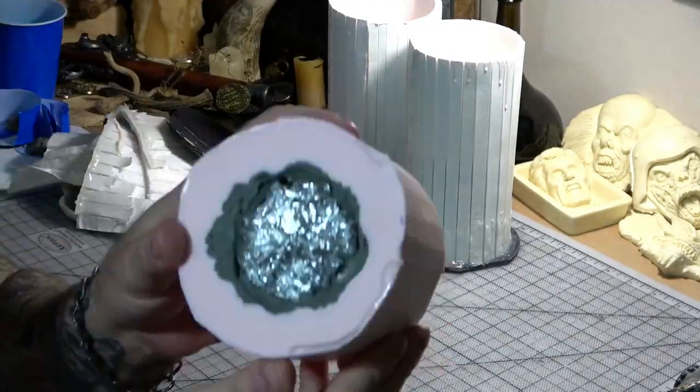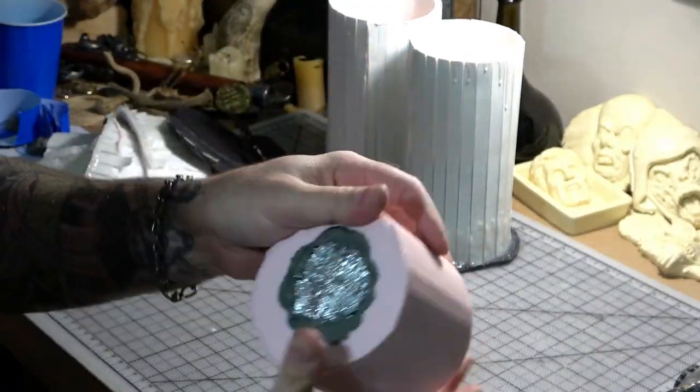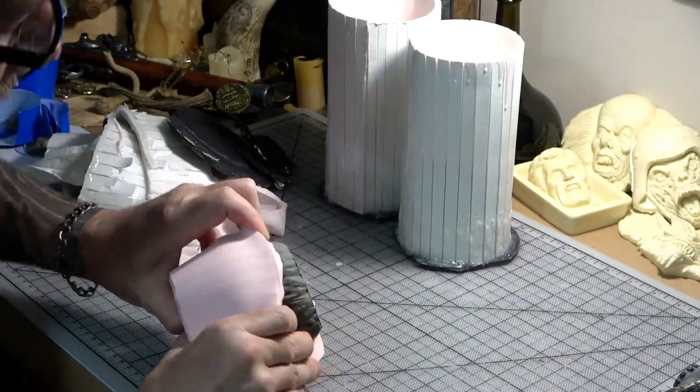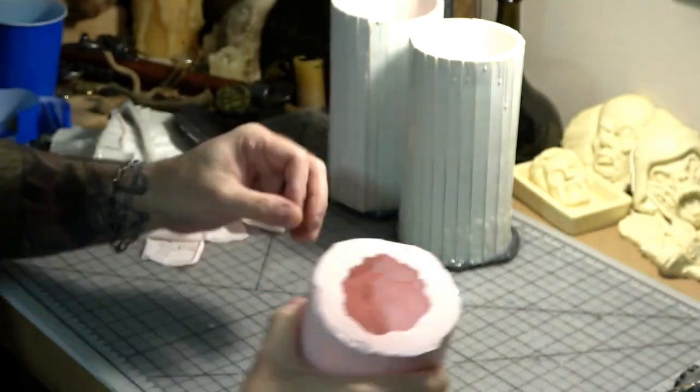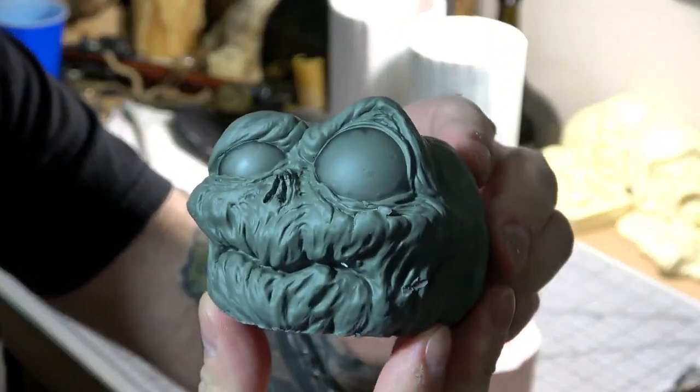Next, I start to pull away the sides and loosen the silicone from the sculpture. Then I grab the sides and push from the bottom with my thumb, and they popped right out. The sculpture was still in pretty decent shape.